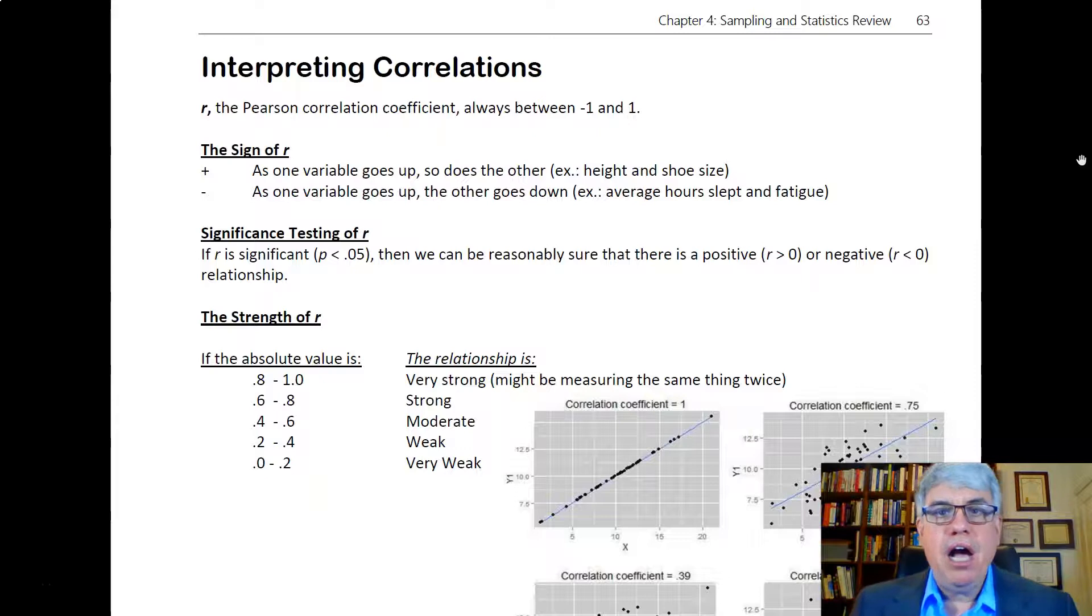Typically a correlation describes how two variables are related to one another. If as one changes, the other one changes at the same time, they're correlated if they change in a predictable way. Typically we use r, the Pearson correlation coefficient, to describe correlation.